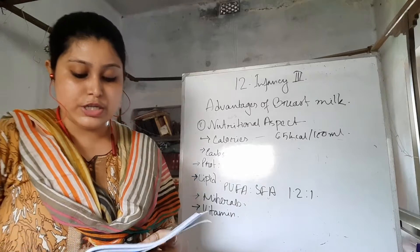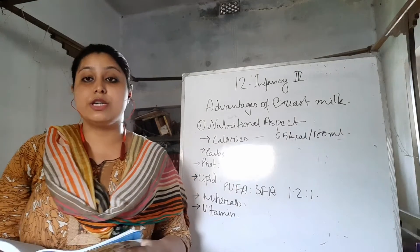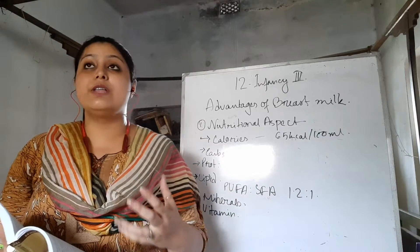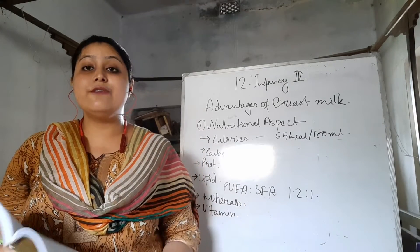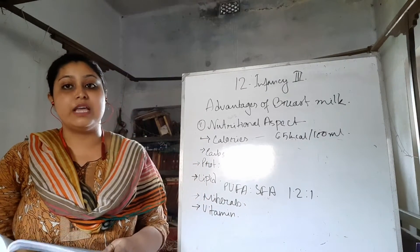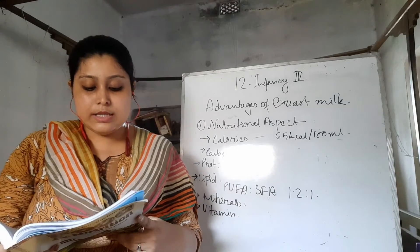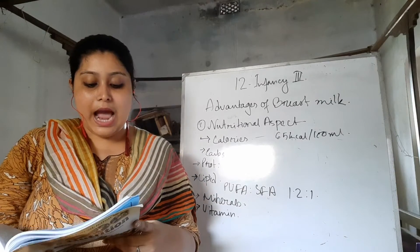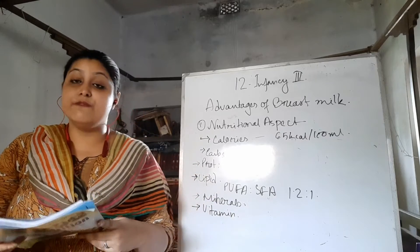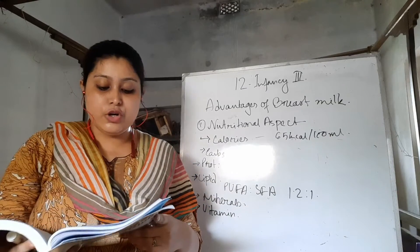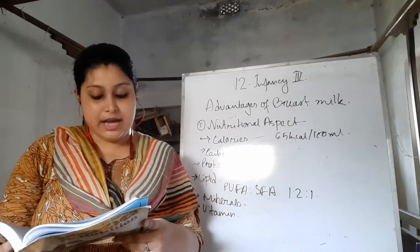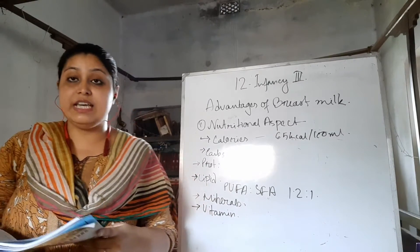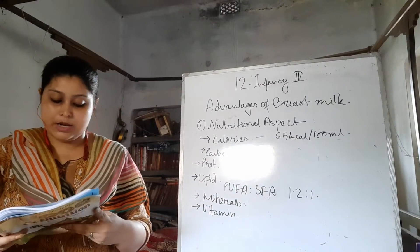Next, the immunological aspects — what can breast milk provide to give the child immunity? Macrophages are present, and both T and B lymphocytes are present. Immunoglobulins are present — immunoglobulins like G, A, and M are all present.